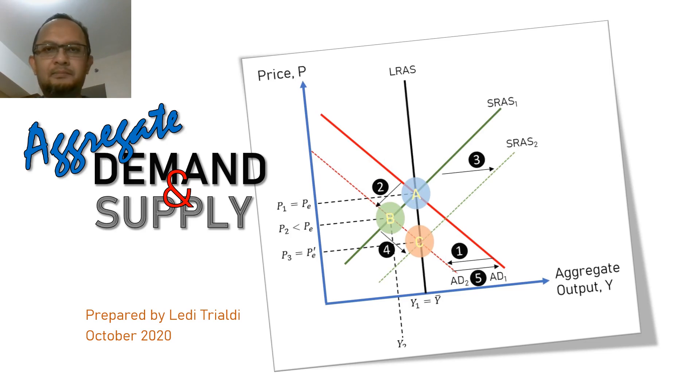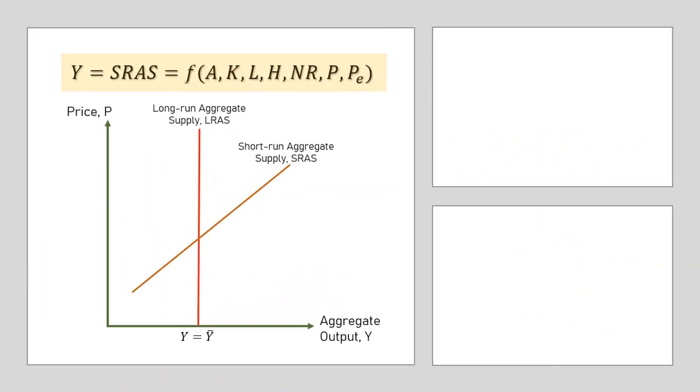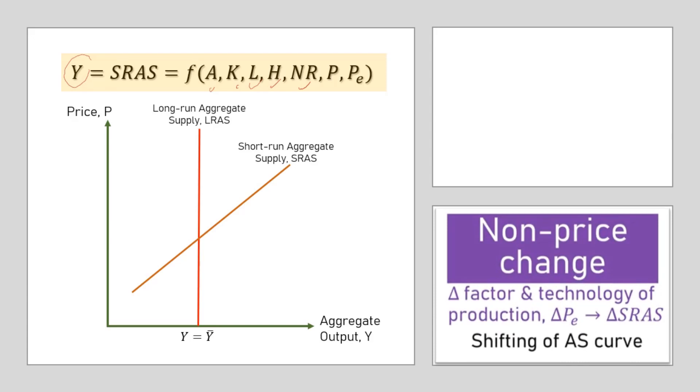We know that factors of production such as labor, capital including human capital, and natural resources, as well as production technology, affect the production of output. Since all of them are non-price factors, just like before, if either one changes it will shift the curve. The AS curve will shift.